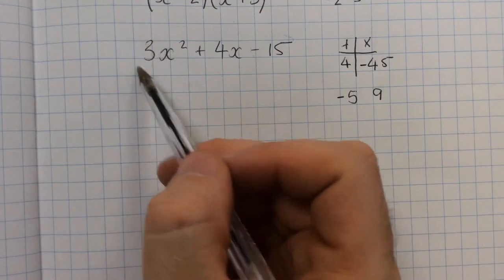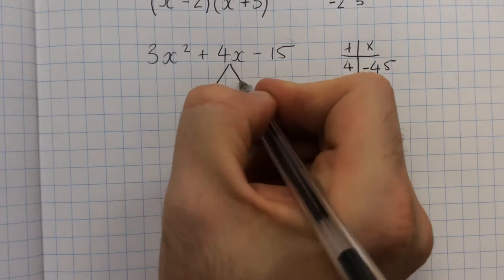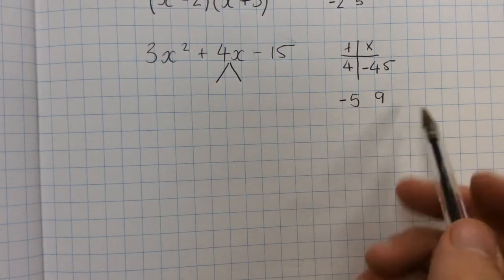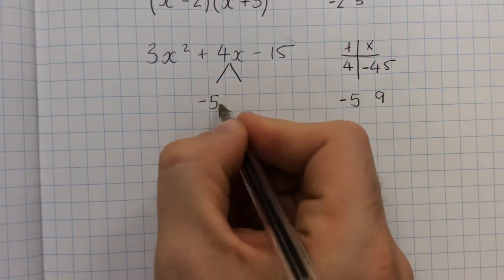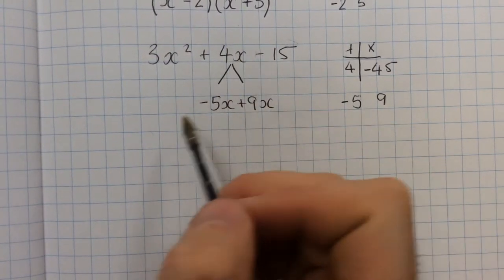Because we've got this 3 here, we can't go straight to the brackets at this point. The way we do it is we split this 4x into these two component parts, so this becomes minus 5x plus 9x. We haven't changed this, we've just written it differently.